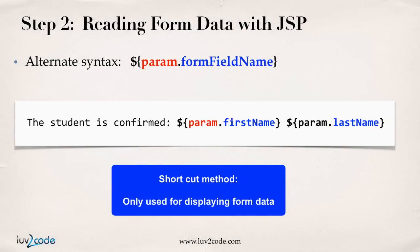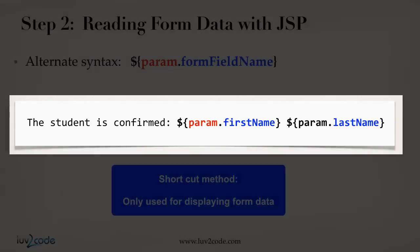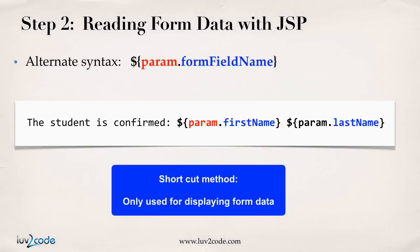Here's an alternate syntax for reading the form data. You can make use of the dollar sign curly brace, and then say param.formFieldName. A simpler way of writing the page is: the student is confirmed, then dollar sign curly brace param.firstName, and similarly dollar sign curly brace param.lastName. This is really just a shortcut method only used for displaying form data. If you needed to read the form data in a script or something, you'd have to resort back to using request.getParameter. As much as possible, I'll try to make use of the shortcut method in our confirmation pages.